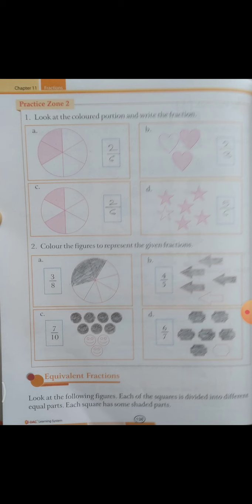Come to question number 2: color the figures to represent the given fraction. Ab 3 by 8 — upar wali jo value hai wo shaded part hai aur neeche wale total blocks. Kitne blocks hain iske andar? Toh aapko 3 parts shade karne hain. B part mein 4 by 5 de rakha hai, toh 5 mein se 4 ko shade karna hai. C part ke andar 7 ko shade karna hai 10 mein se. And D part ke andar 6 by 7 — it means 6 parts ko shade karna hai.